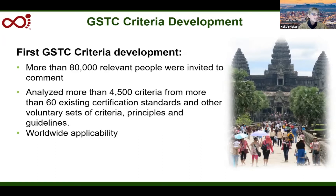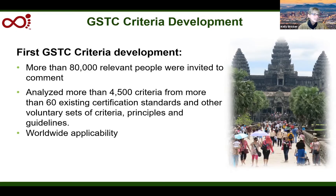In 2008, the GSTC partnership developed a set of baseline criteria organized around the four pillars of sustainable tourism, which ultimately formed the GSTC criteria. We had over 6,000 inputs from private sector, public sector, academia, and NGOs. The GSTC criteria is not a set of standards for developed countries only — it is truly an inclusive process. They have worldwide applicability, suitable for the developed and developing world, and applicable to large and small businesses, urban and rural communities.